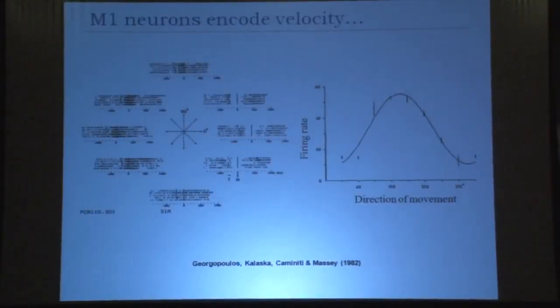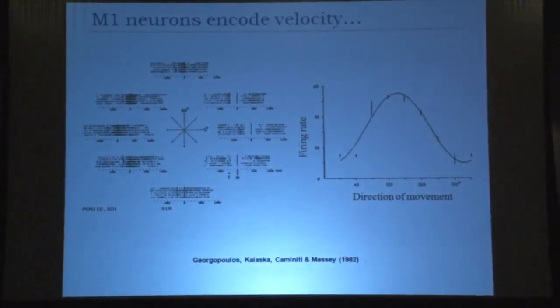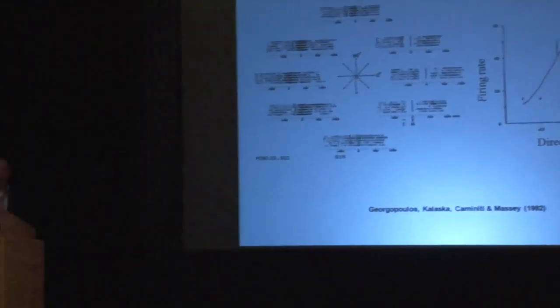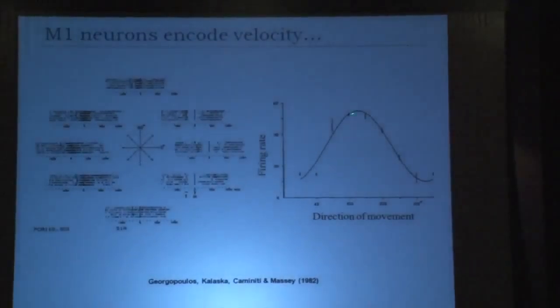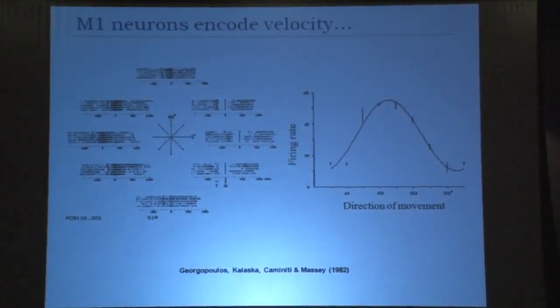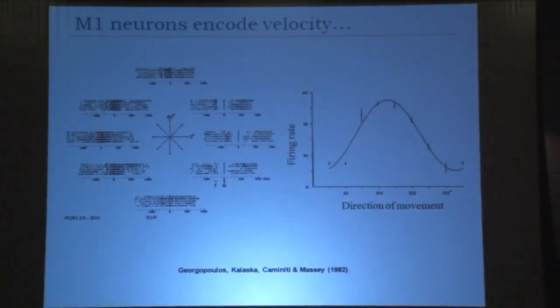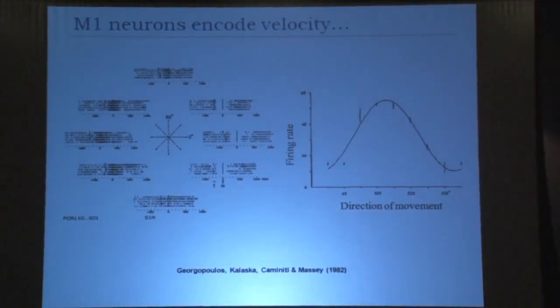To do this, we have to understand how neurons represent movement naturally. The landmark experiment was done about three decades ago by Georgopoulos and colleagues, where they recorded from single neurons in motor cortex as monkeys made two-dimensional center-out reaching movements — from the center of a workspace to targets equally spaced around a circle. Georgopoulos noticed that neurons responded in a lawful manner: most had a preferred direction where they fired maximally, and an anti-preferred direction where they stopped firing, obeying a cosine tuning curve.